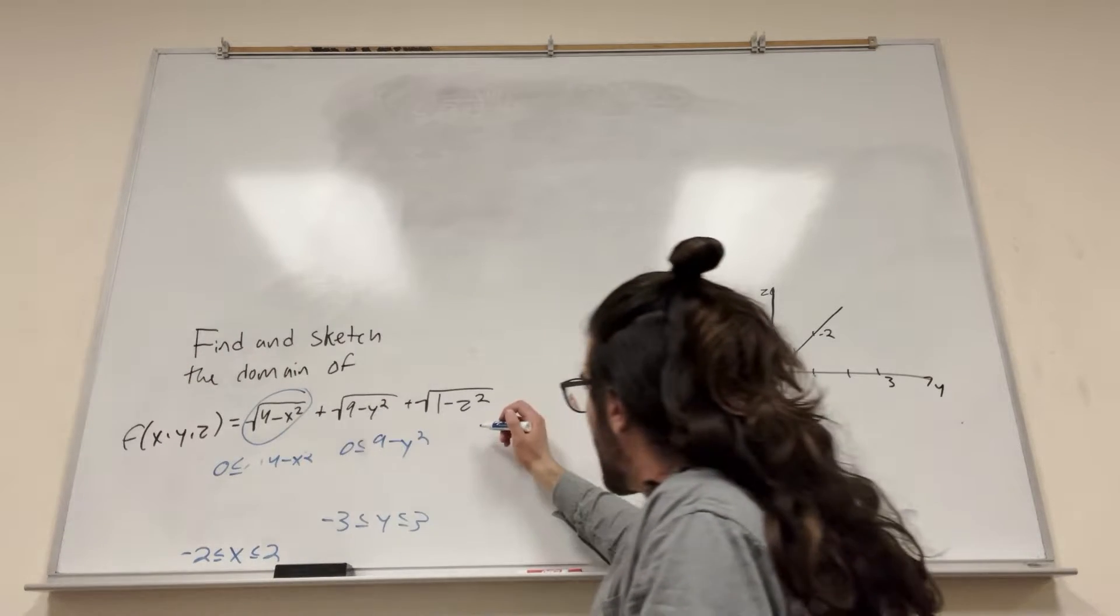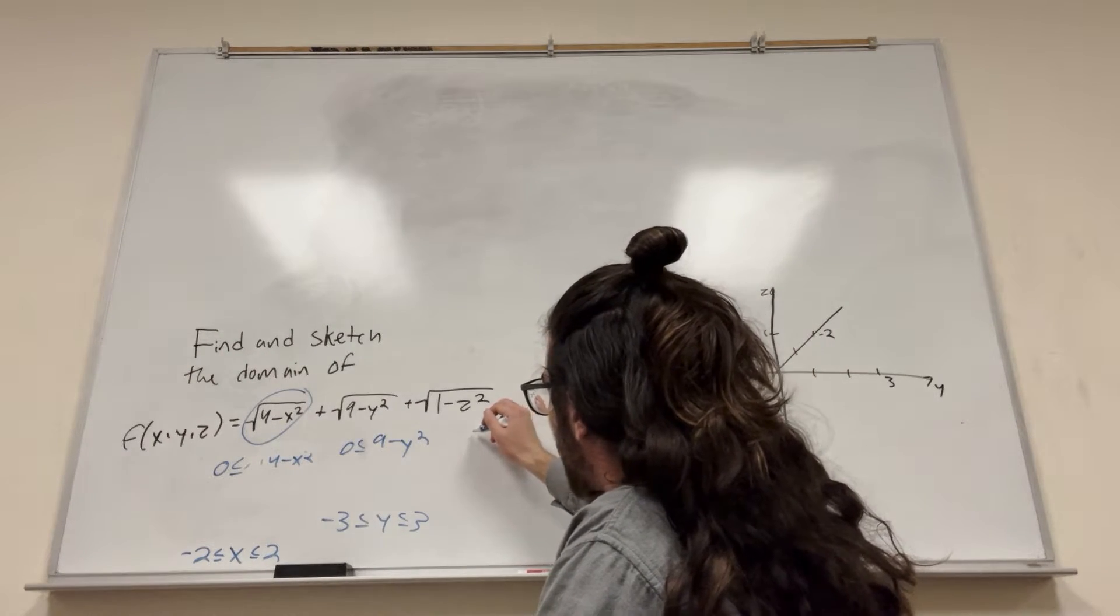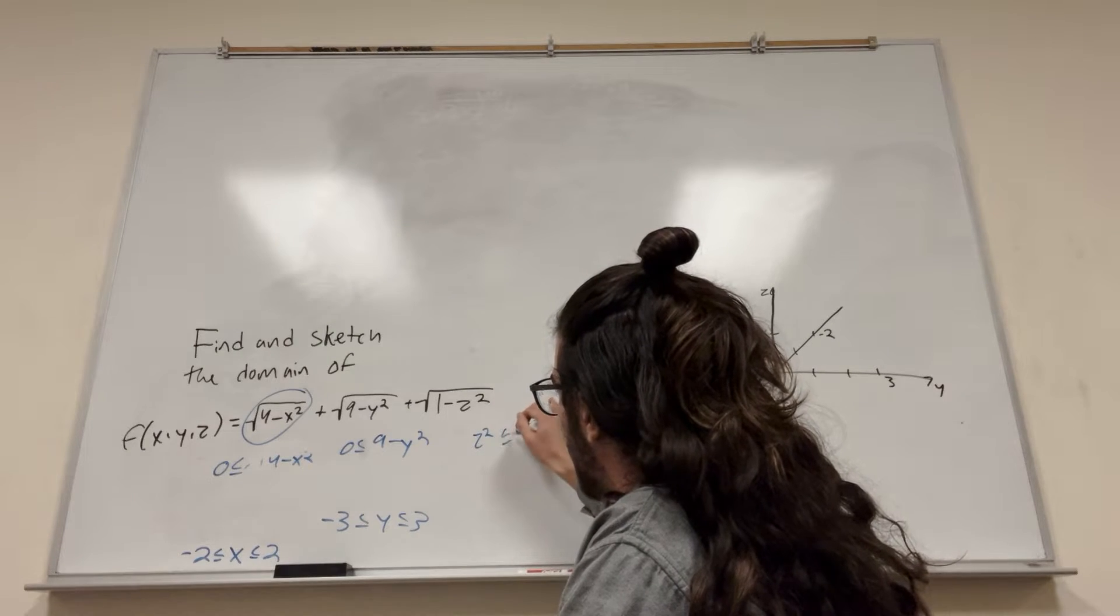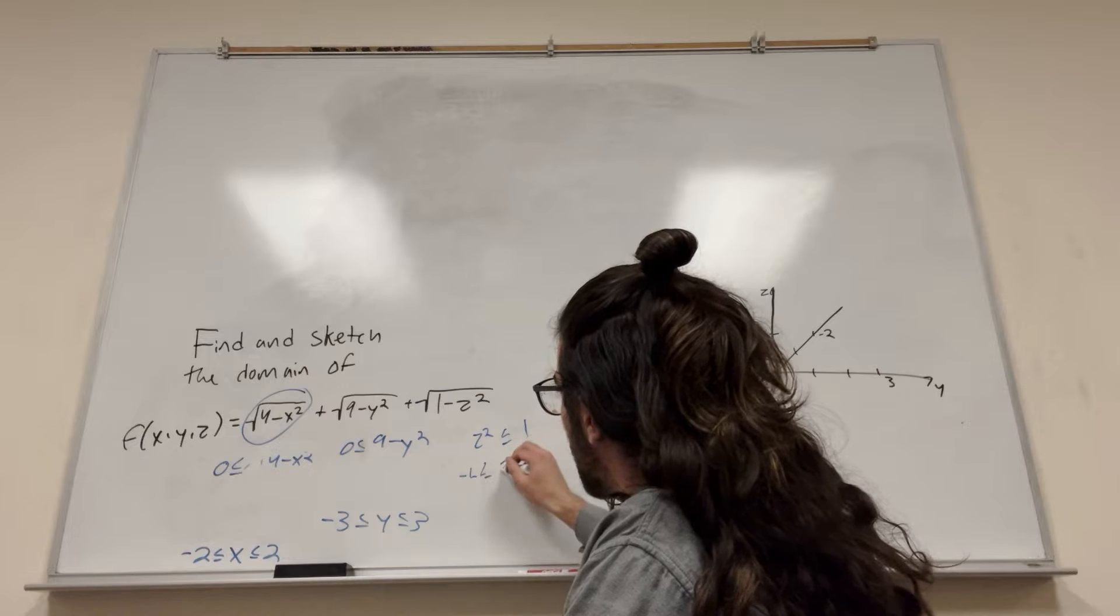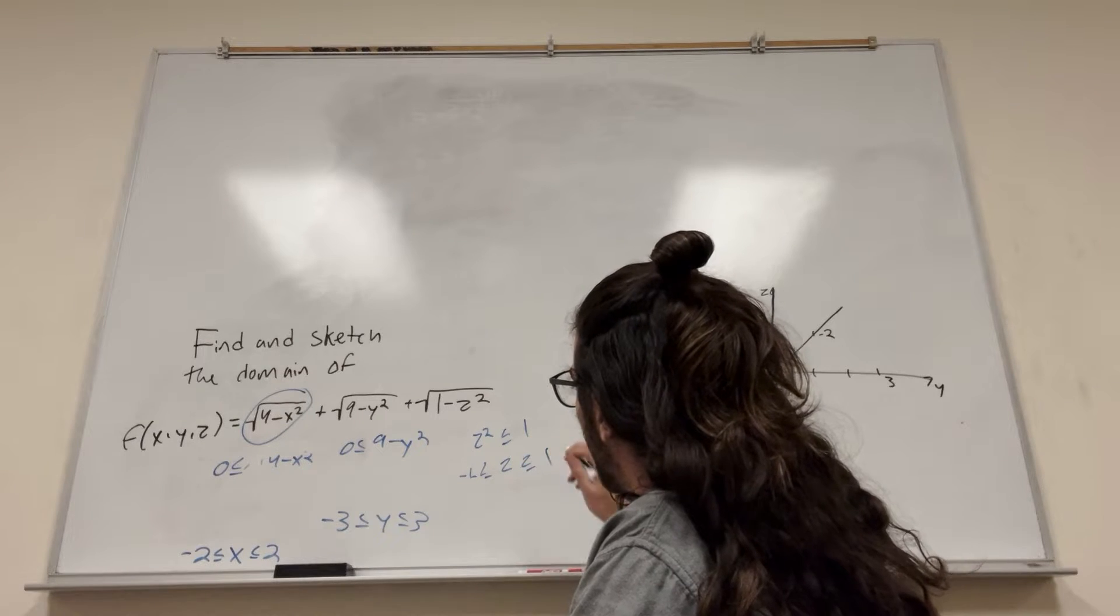Same thing for z over here. It'll be z squared is less than or equal to one. So negative one is less than or equal to z is less than or equal to one.